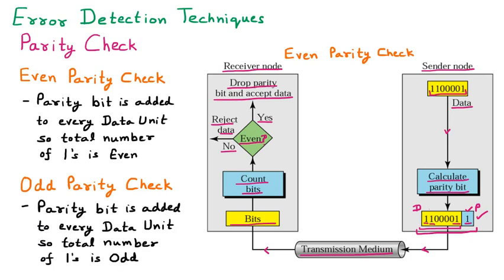The functioning of even and odd parity is the same. In even parity, the number of ones is even; in odd parity, it's odd. At the receiver side, they calculate for even or odd, then accept or reject the packets. That is all about parity check, which is an error detection technique.